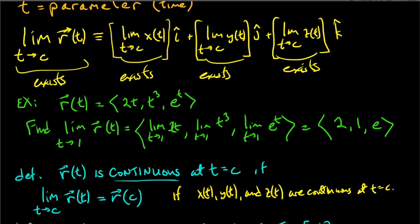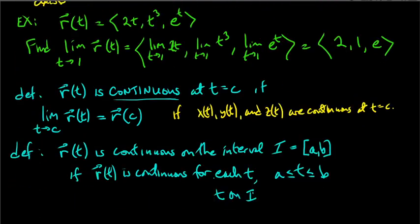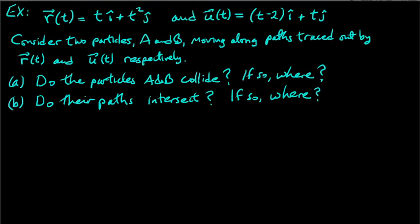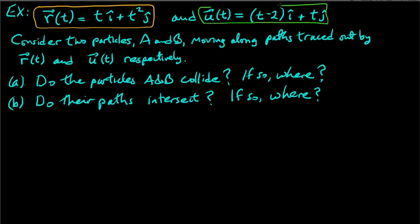For this video, let's do a few more examples exploring vector-valued functions and their graphs. This example illustrates the difference between the motion of particles and the geometric paths they trace. We have two vector-valued functions r and u, and two particles A and B moving along paths traced by r and u respectively.